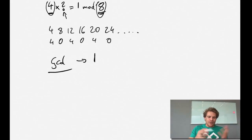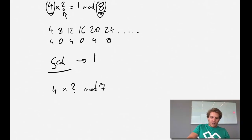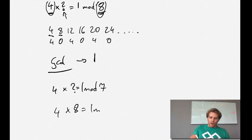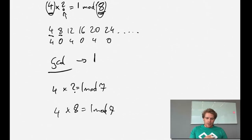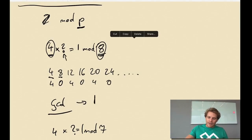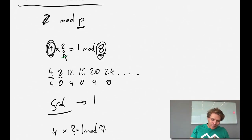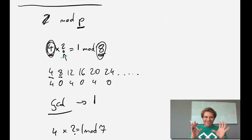With a prime modulus, this problem disappears. For example: 4 times what equals 1 mod 7? We find that 4 × 2 = 8 ≡ 1 mod 7. So it works. That's why we always use mod prime - it guarantees we can find inverses, which we'll need constantly, especially when talking about RSA.